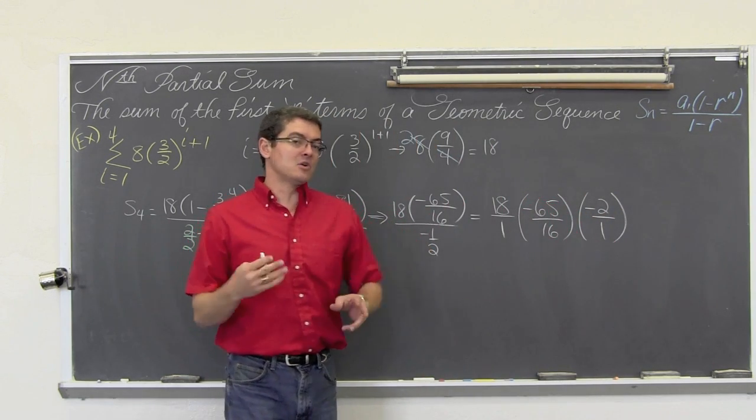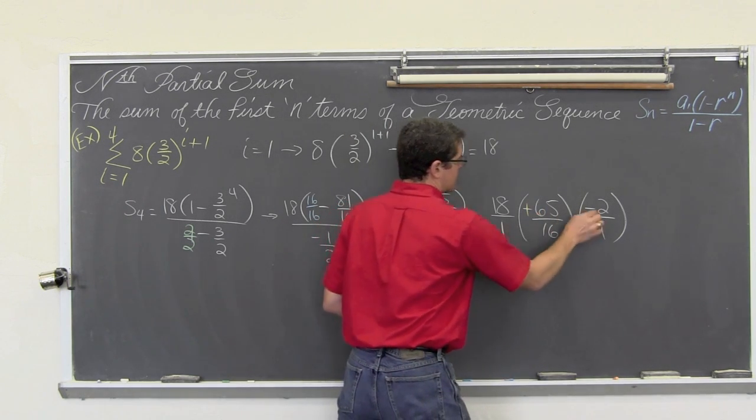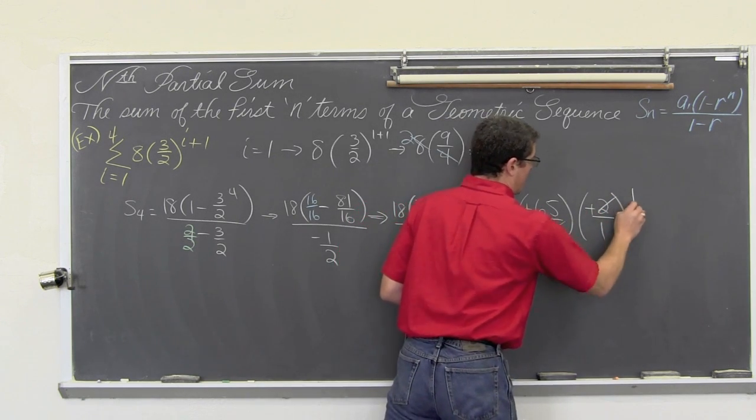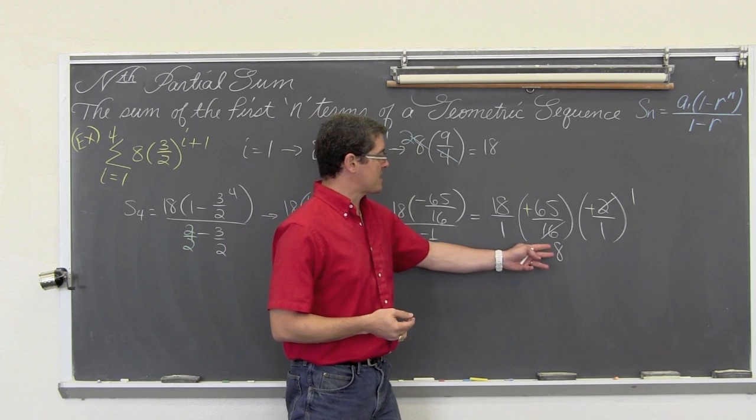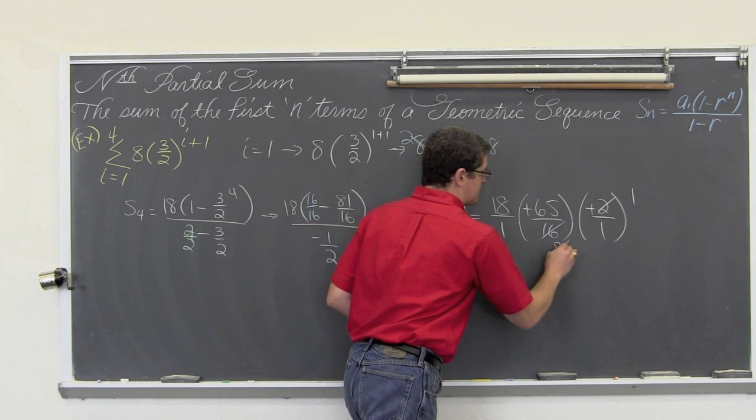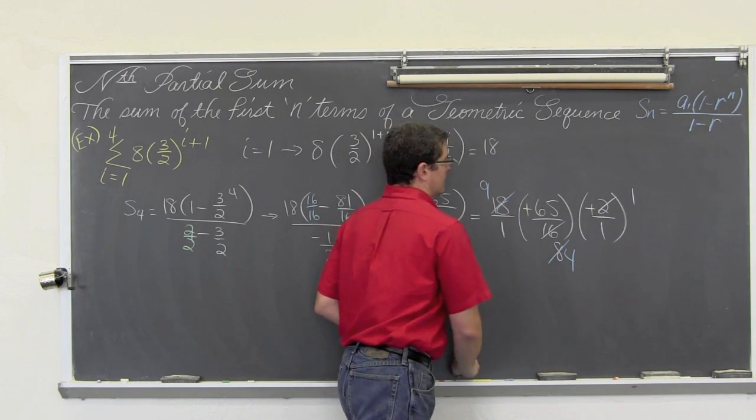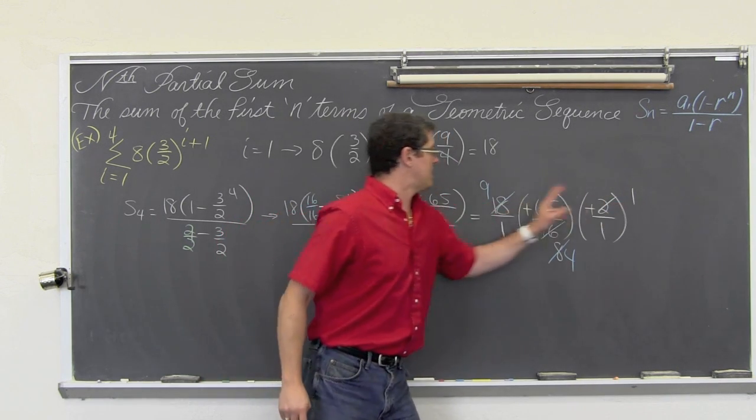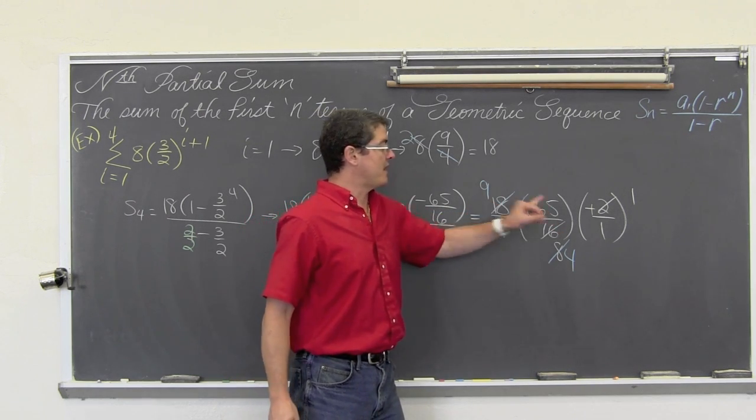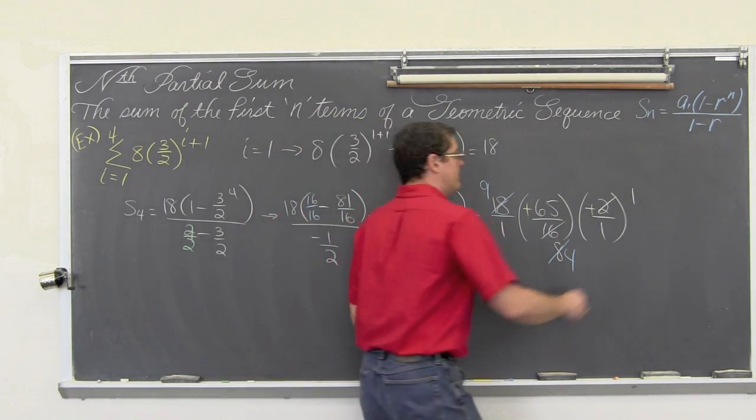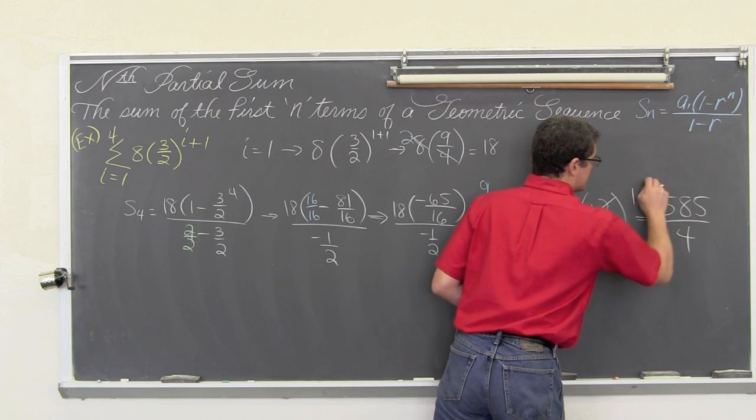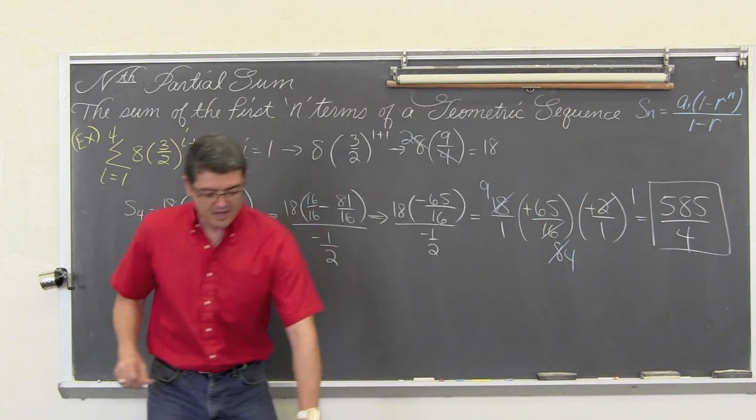Let's reduce this and multiply. Two negatives multiply together to make a positive answer. 2 and 16 will cancel out to be 1 and 8. And then we can cancel some more because 8 is even and so is 18. 8 divided by 2 is equal to 4, and 18 divided by 2 is equal to 9. So we have 9 times 65. 9 times 60 is 540, 9 times 5 is 45, so 540 and 45 is equal to 585 over the denominator of 4, which is our final answer of 585 over 4.